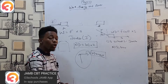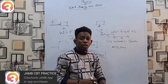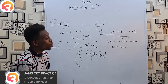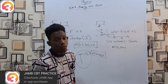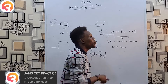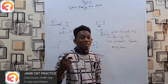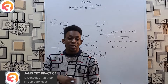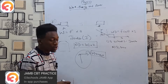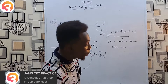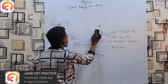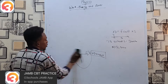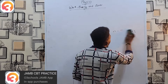Now we move on to energy. What is energy? Energy is the ability or capacity to do work — it's what gives us the ability to move objects by applying force over distances. There are many types: solar energy, thermal energy, mechanical energy, chemical energy. But the two main forms we study are potential and kinetic.